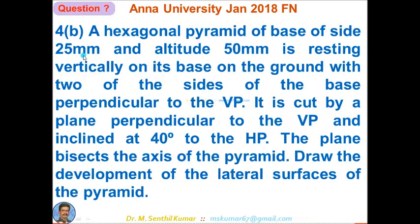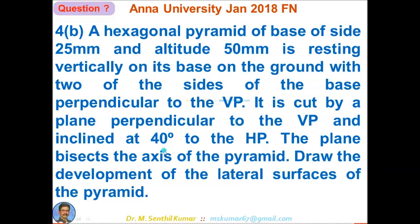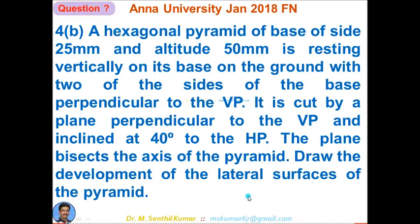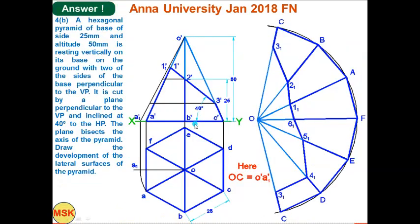Question 4B: a hexagonal pyramid of base side 25 mm and altitude 50 mm rests vertically on its base, with two sides of the base perpendicular to VP. It is cut by a plane perpendicular to VP and inclined at 40 degrees, bisecting the axis. Draw the development of the lateral surface. Since it is a pyramid, you follow the radial line method. Draw the projections with the given data; the cutting plane cuts all six slant edges.